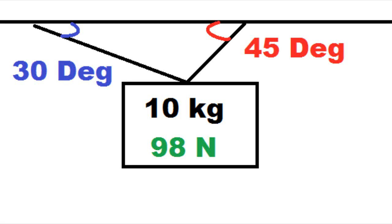In this problem, we have an object that has a mass of 10 kilograms and it's hanging from two ropes at different angles. We want to find what the tension in each of those ropes are. So if we just take 10 kilograms times the acceleration due to gravity of 9.8 meters per second per second, we get 98 newtons as the weight.